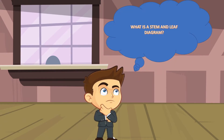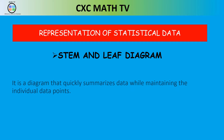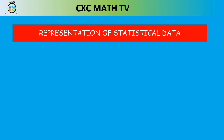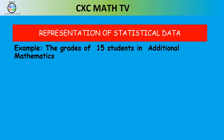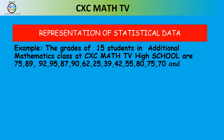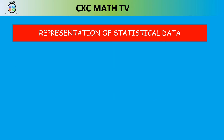A stem and leaf diagram is a diagram that quickly summarizes data while maintaining its individual data points. The best way to understand stem and leaf is with an example. The grades of 15 students in an additional mathematics class are given: 75, 89, 92, 95, 87, 90, 62, 25, 39, 42, 55, 80, 75, 70, and 69. To create our stem and leaf diagram, there are three steps.